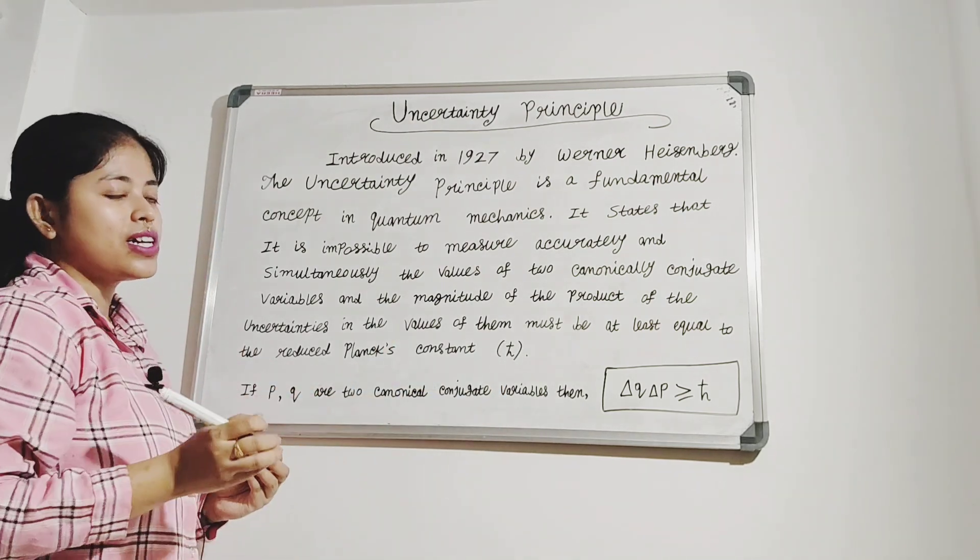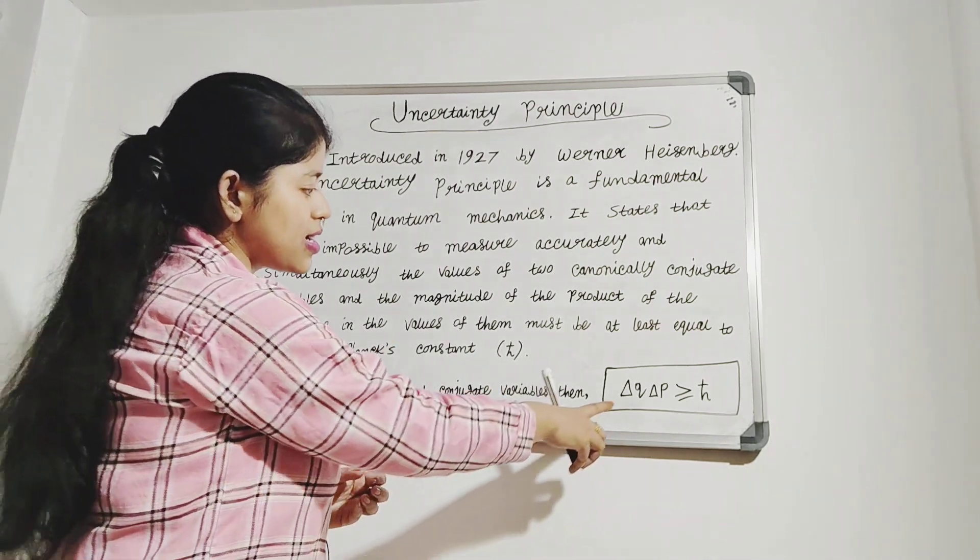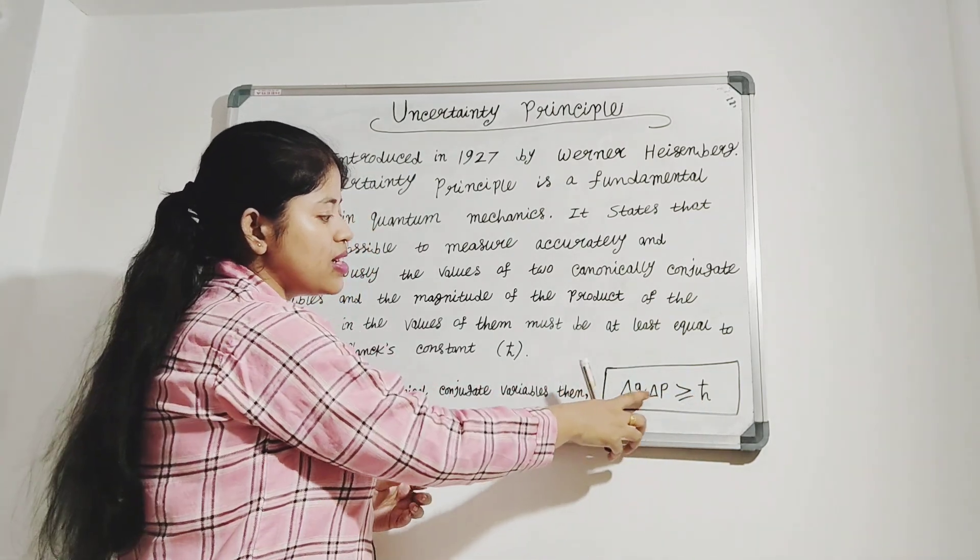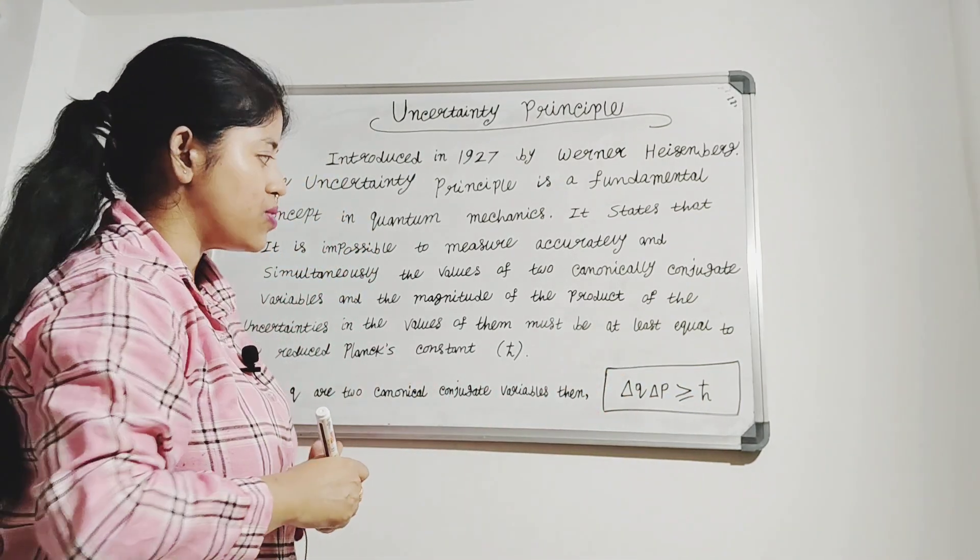So if p and q are two canonically conjugate variables, then delta q into delta p is greater than or equal to h-cut, where delta q and delta p are the uncertainties in their values.